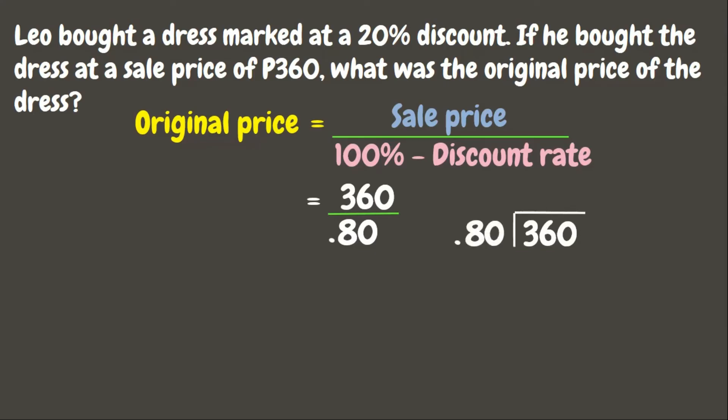Again, we need to make sure the divisor is a whole number, so let us move the decimal point. Since we moved two times to the right in the divisor, we also move two times in the dividend — one, two — and don't forget to put zeros. Now let us divide 36,000 by 80.